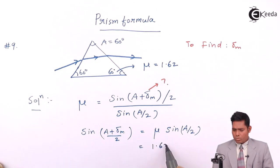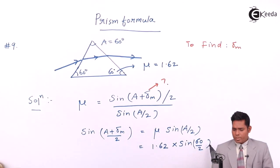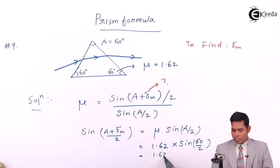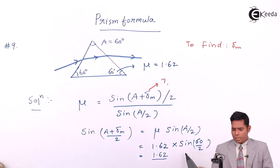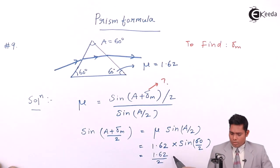I'll rearrange to get: sine of (A plus delta m) by 2 equals mu times sine of A by 2. Putting in the values: 1.62 times sine of 30 degrees. Sine 30 is one half, so dividing: 1.62 times 0.5 gives 0.81.